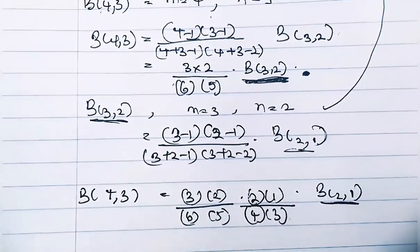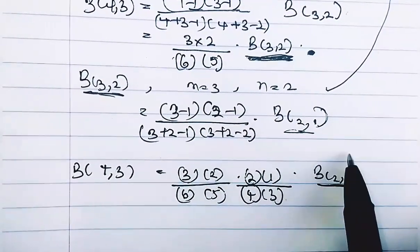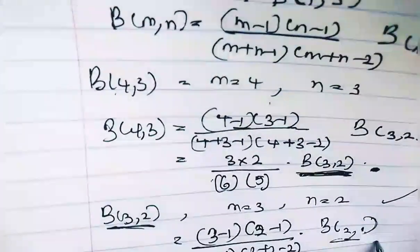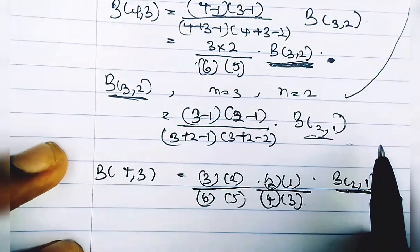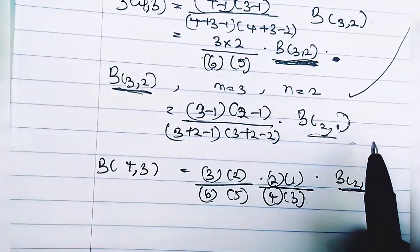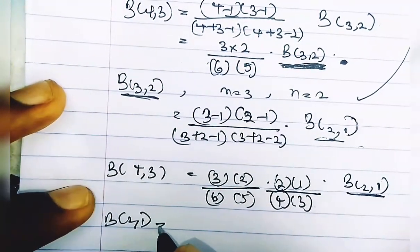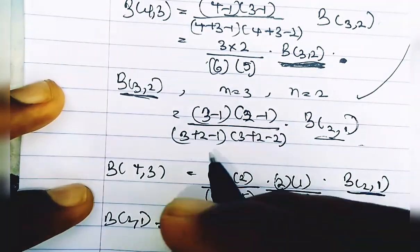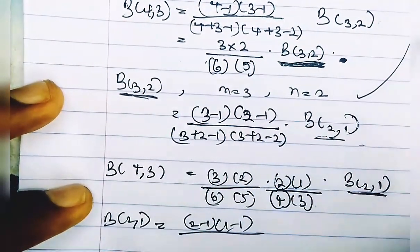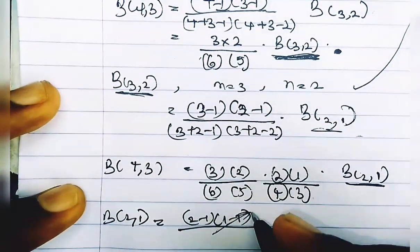Now you might ask: why can't we just use the formula to get the value of B(2, 1)? If we try, we get m=2 and n=1 substituted in, giving (2−1)(1−1) — and 1−1 is 0, so everything becomes 0. We cannot use the recursion formula because it yields 0. So we need a different approach.